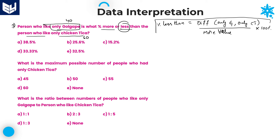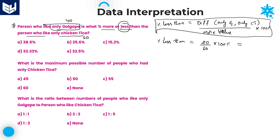The percentage less than equals: difference is 20, divided by the higher value which is 60, multiplied by 100%. That is 20/60 × 100 = one-third of 100 = 33.33%. The options are given in terms of decimals, so the answer is 33.33%. Option D is the right answer.